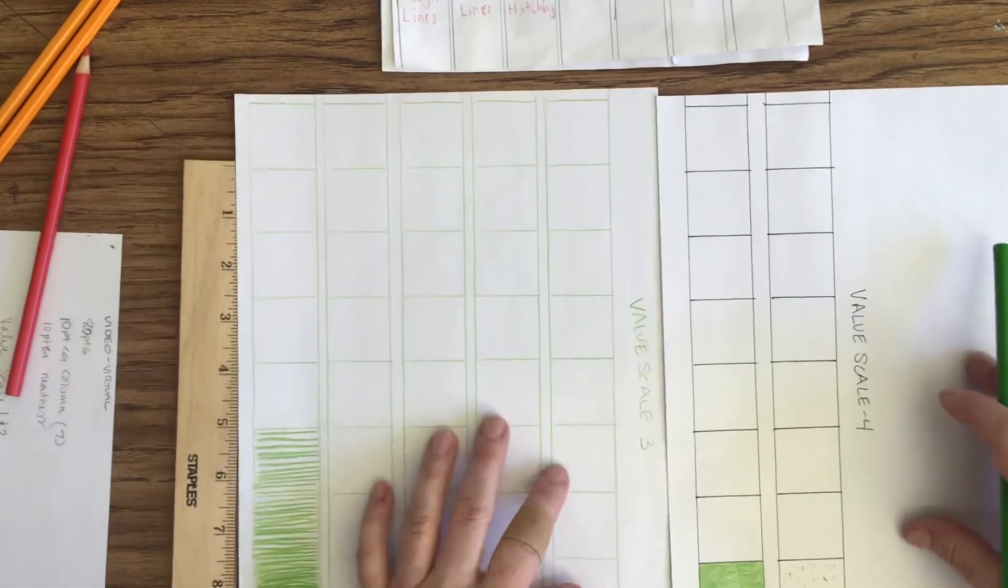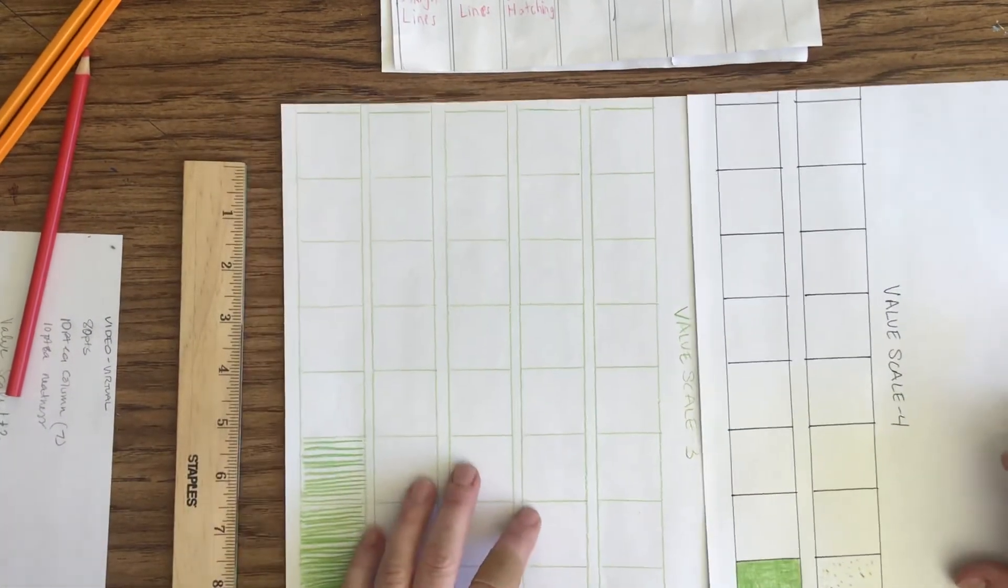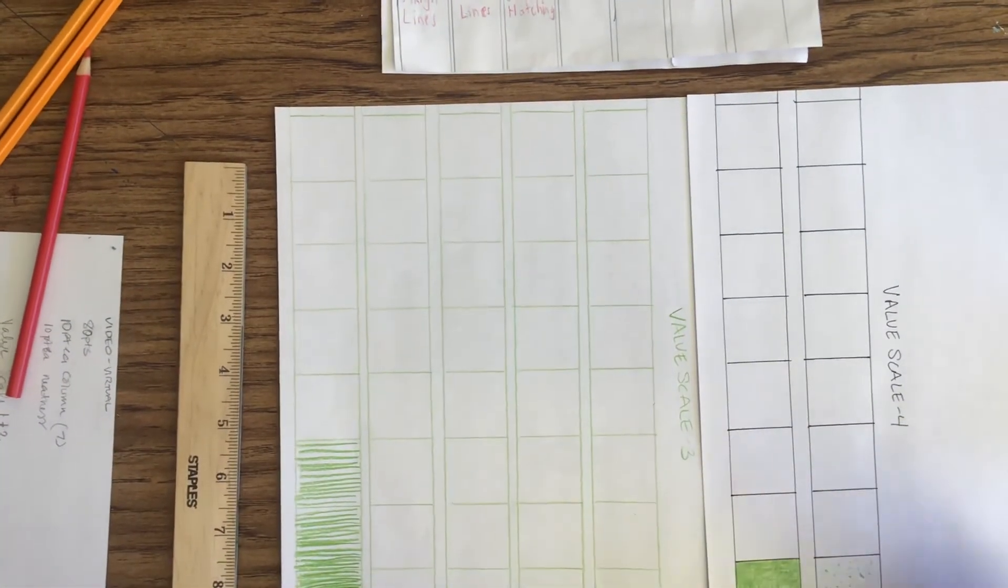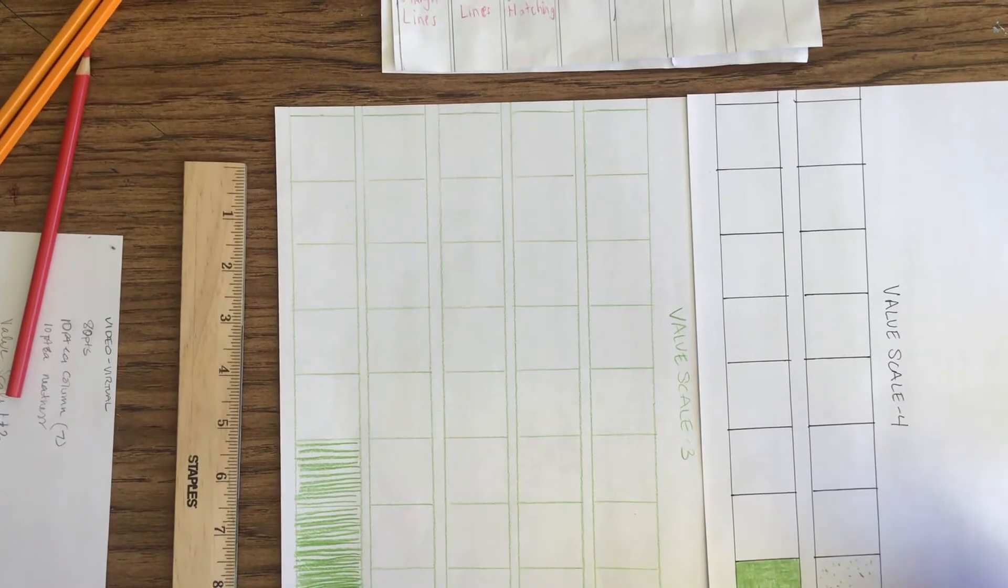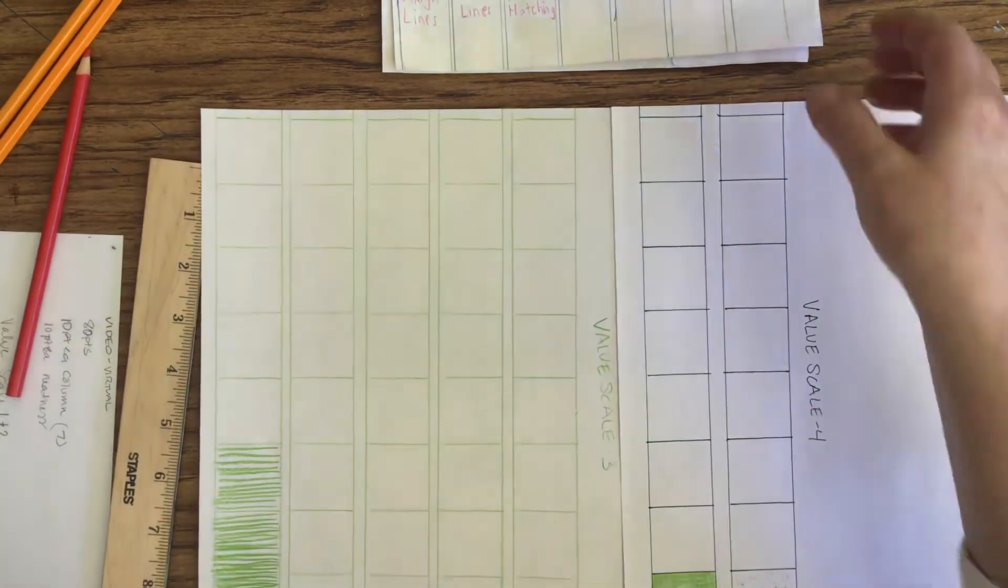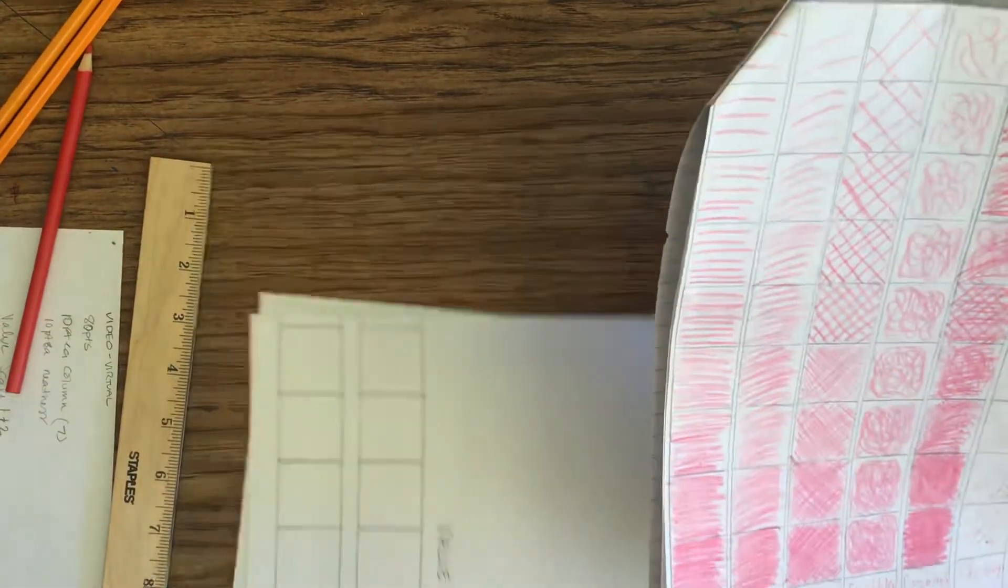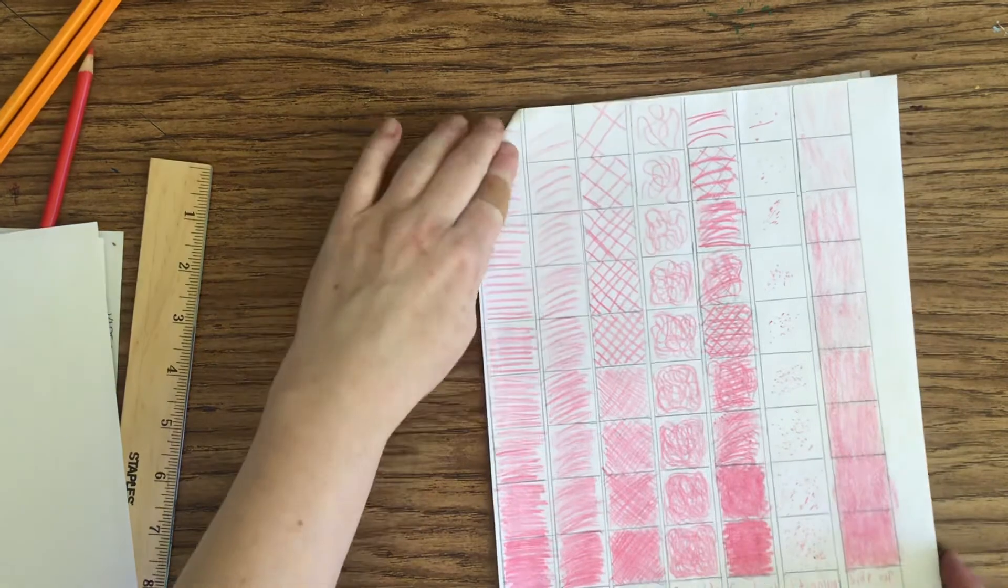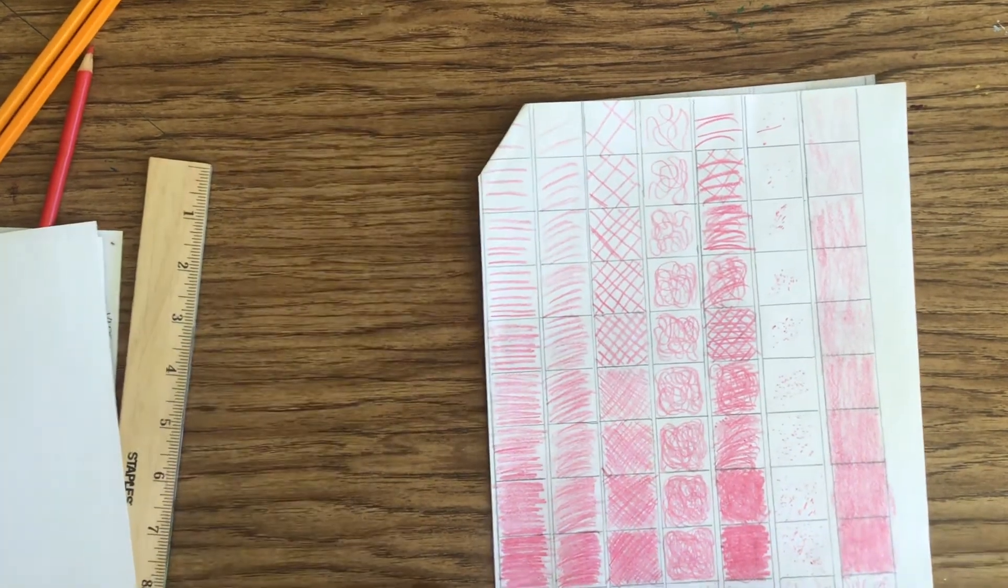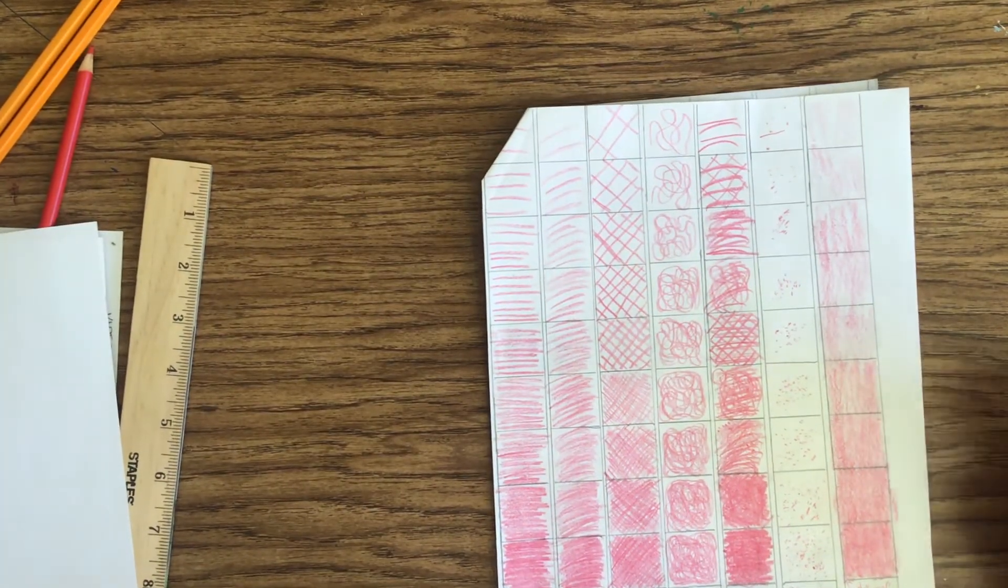So, here we are for value scales three and four. You're going to have what we did for the first five, and then we have the other two that we added. And then I want to show you an example, a student example here. This was from a student from last year. They did straight lines, contour lines, and they did really well on this.